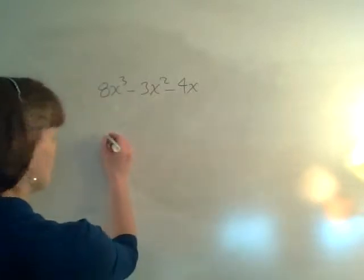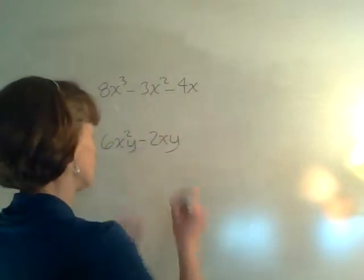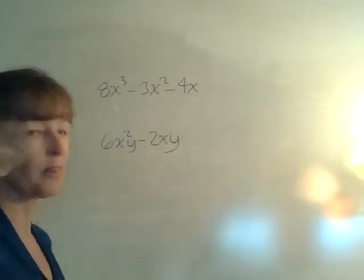Here's another example of a polynomial: 6x²y - 2xy. This is a polynomial with two terms.